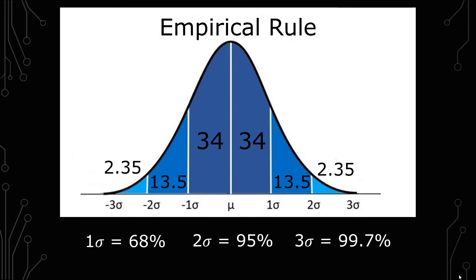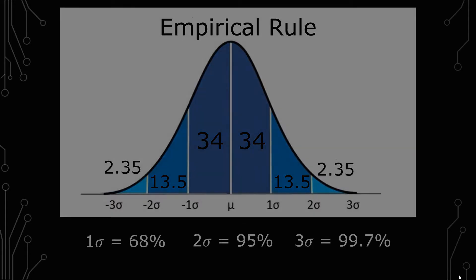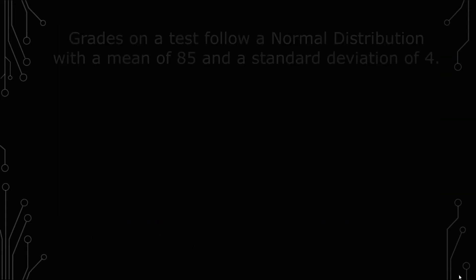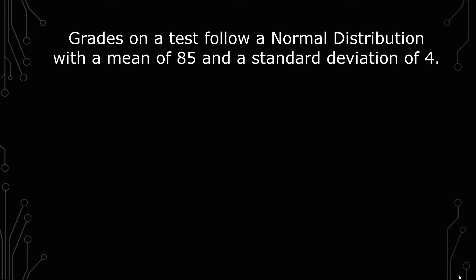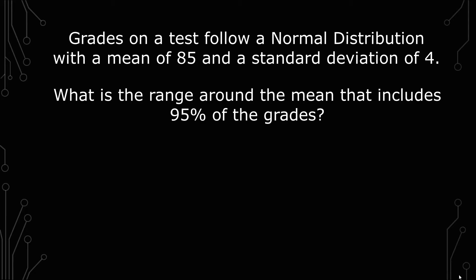Having covered that, let's get into our first example. Grades on a test follow a normal distribution with a mean of 85 and a standard deviation of 4. What is the range around the mean that includes 95% of the grades?